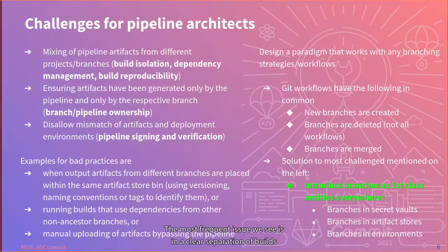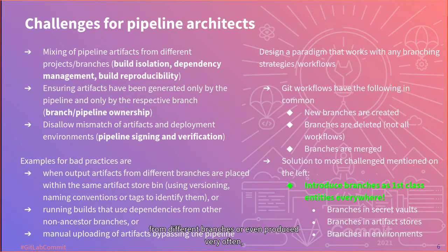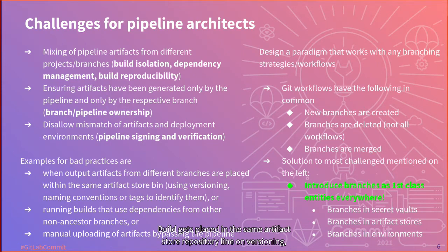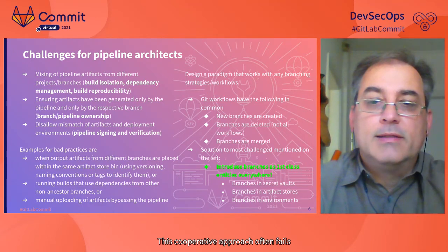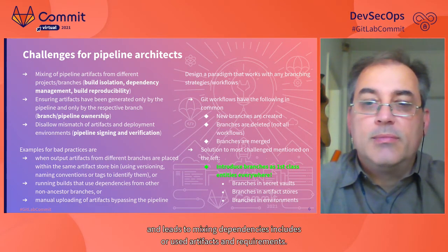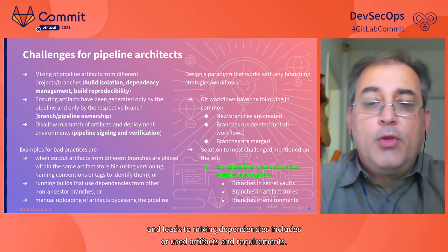Having placed our bets on the runner to do the integration, let's see what challenges we usually face at customers and what solutions we can design to address this. The most frequent issue we see is an unclean separation of builds from different branches or even projects. Very often builds get placed in the same artifact store repository, relying on versioning, tagging, or other naming conventions to select the right ones.